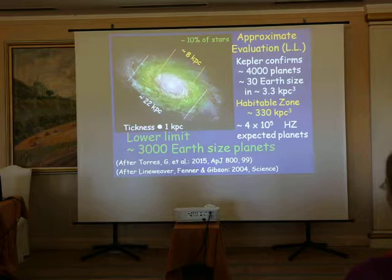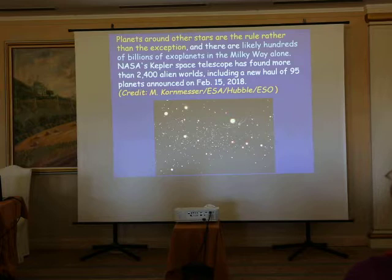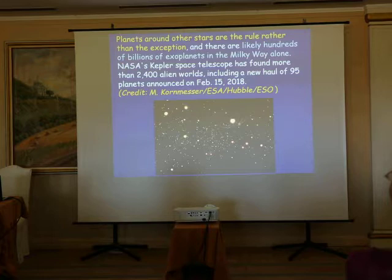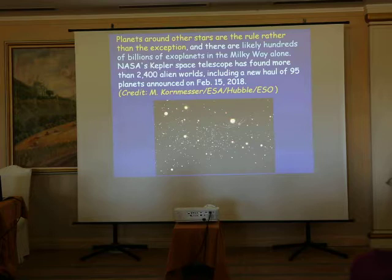This means we have the possibility of having many companions. The news is that planets around other stars are the rule rather than the exception. Since the number of stars in the galaxy is of the order of 200 billion, we can expect to have in the galaxy at least 1,000 billion planets, and therefore many planets on which we could probably have something in movement.